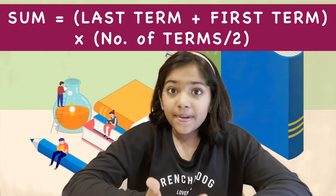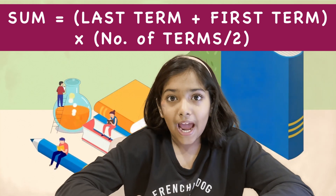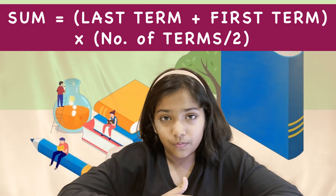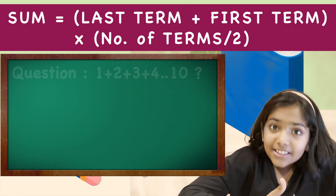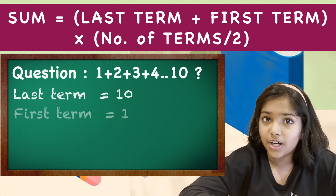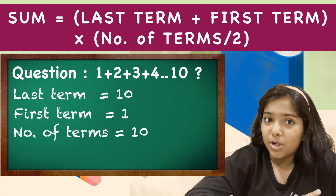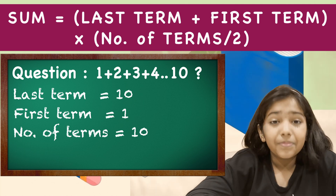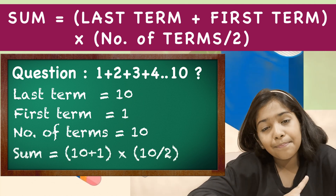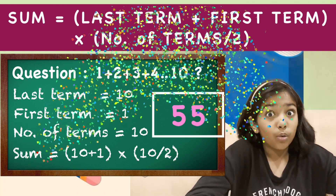Let me introduce you to a new formula. Sum is equal to last term plus first term, multiplied by number of terms, divided by 2. The last term is 10, the first term is 1, the number of terms is 10. Let's see if our formula works: 10 plus 1, multiplied by 10, divided by 2 equals 55. Wow!